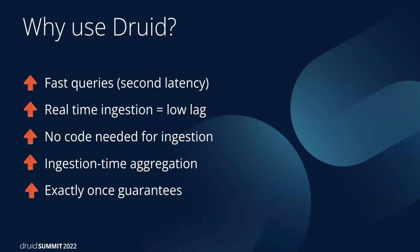Why do we use Druid? The most important reason is fast queries — we can get sub-second latency. There's also real-time ingestion directly from Kafka, meaning low ingestion lag with no code needed — just specify a JSON ingestion spec and it reads from Kafka. Ingestion-time aggregation is important because we're storing individual events for each view or click, and aggregating at ingestion time rather than query time makes queries much faster. Finally, Druid's Kafka stream ingestion has exactly-once guarantees, which are critical when querying aggregate stats like total spend.